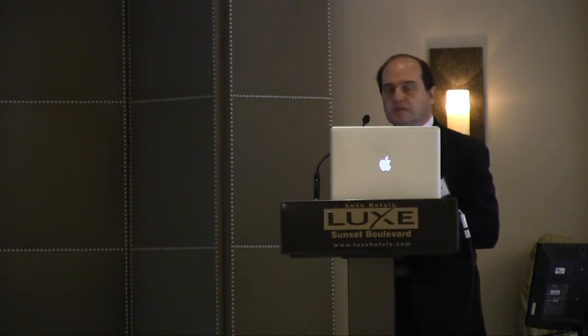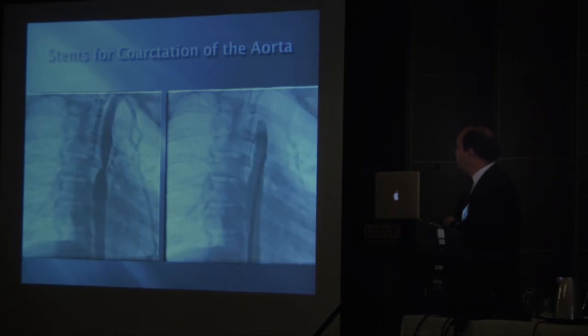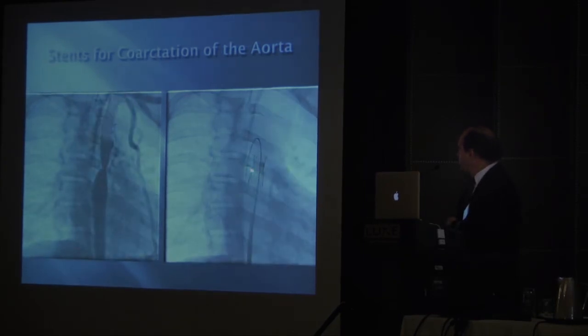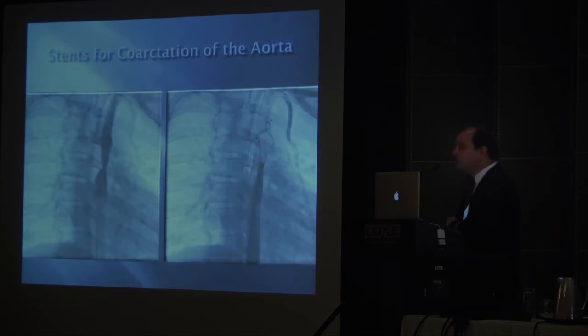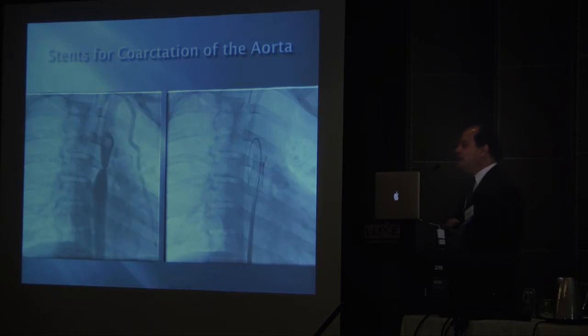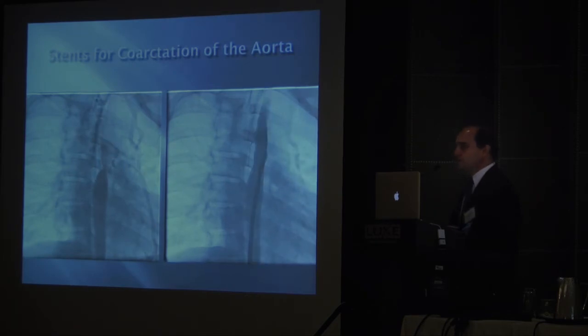This is a patient with a fairly severe coarctation of the aorta. You can see all the arterial collaterals the patient has been depending on for flow to the descending aorta. The obstruction was crossed and an uncovered bare metal stent was placed. I hope this is not our usual practice anymore, because I think this is much better and safer to address with covered stents than bare metal stents.